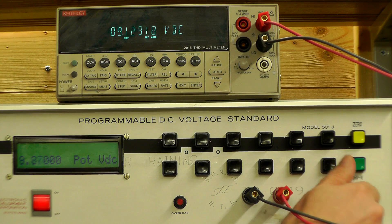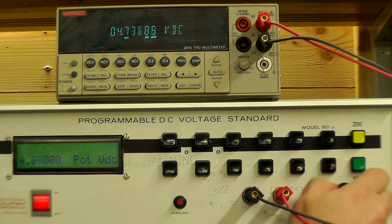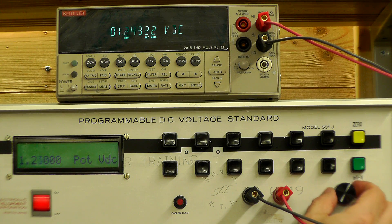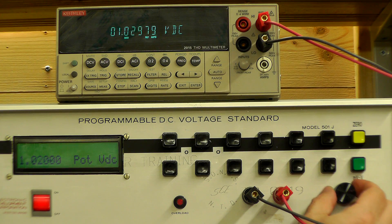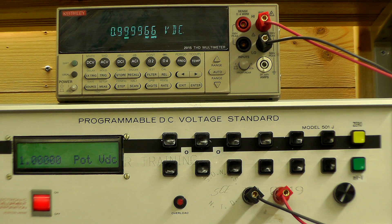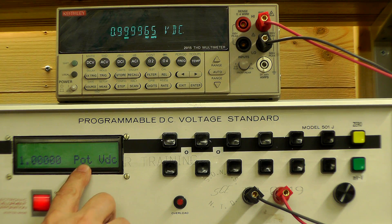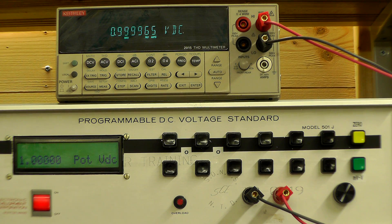And then obviously right down as well. I've got to just wind it back down to 1 volt here for instance. There we go. 1 volt. So that's the pot mode for VDC volts out.